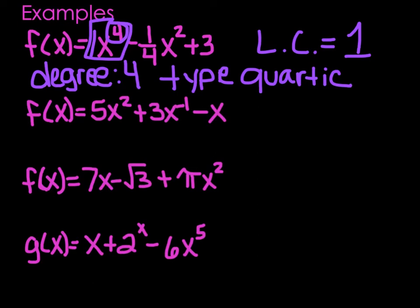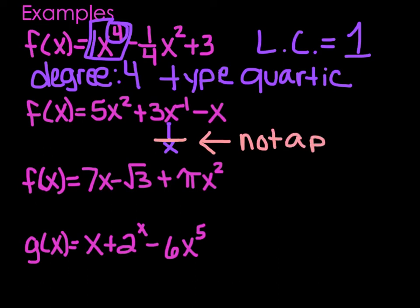The second one: f of x equals 5x squared plus 3x to the negative 1 power minus x. X to the negative 1 power is the same thing as 1 over x. Looking back at our definition, a monomial is a number, variable, or product of numbers and variables — this is not a product, it's a quotient. So this is not a polynomial at all.